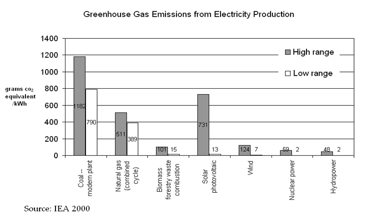The United Nations Framework Convention on Climate Change has the ultimate objective of preventing dangerous anthropogenic interference of the climate system. As stated in Article 2 of the Convention, this requires that greenhouse gas concentrations are stabilized in the atmosphere at a level where ecosystems can adapt naturally to climate change, food production is not threatened, and economic development can proceed in a sustainable fashion. There are a number of anthropogenic greenhouse gases, including carbon dioxide (CO2), methane, nitrous oxide, and a group of gases referred to as halocarbons.